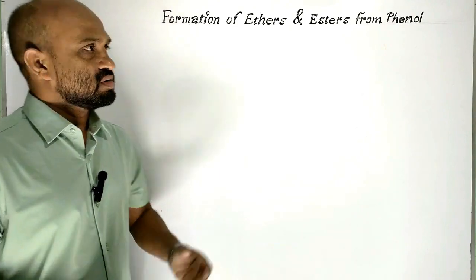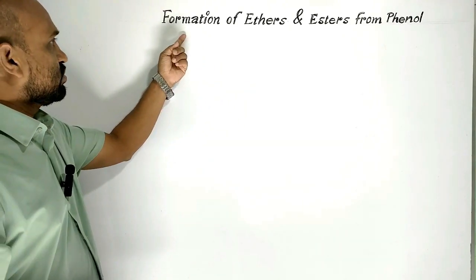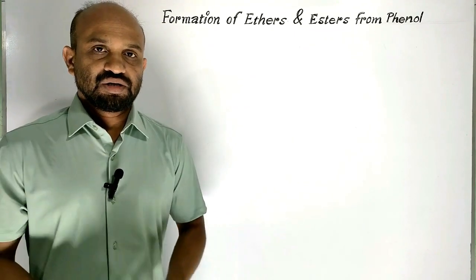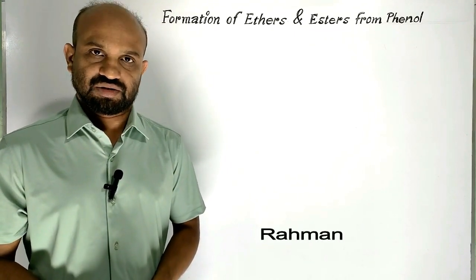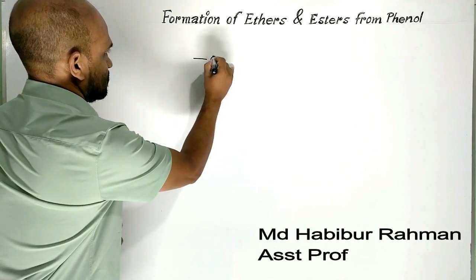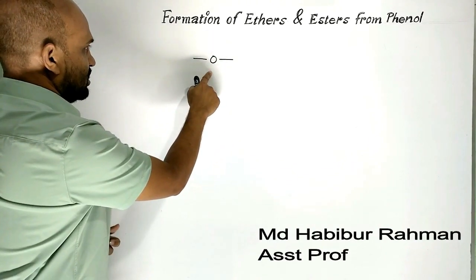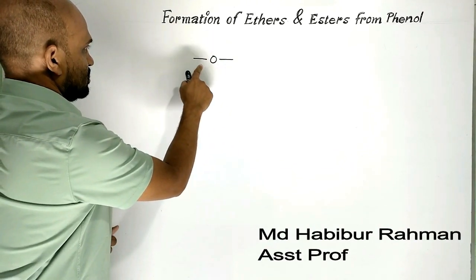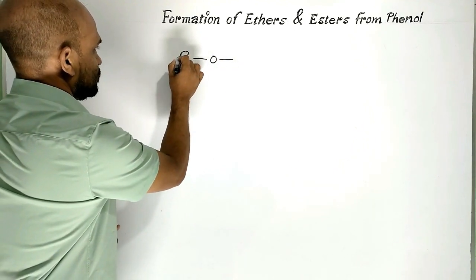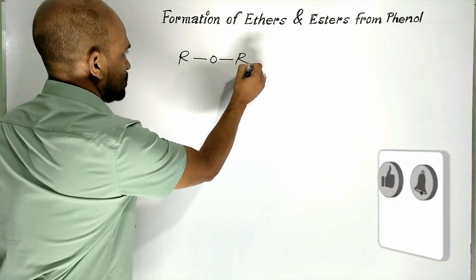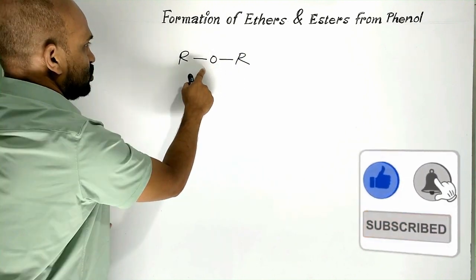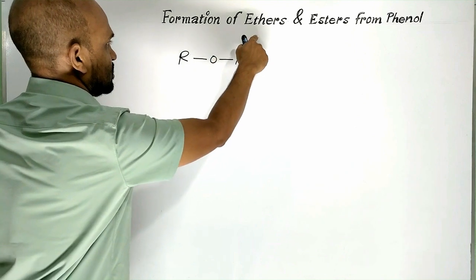Today's lesson: formation of ethers and esters from phenol. Let us see the general formulae of ethers and esters. Divalent oxygen — when these two valences are satisfied with alkyl groups or aryl groups, then it will be the general formulae of ethers.